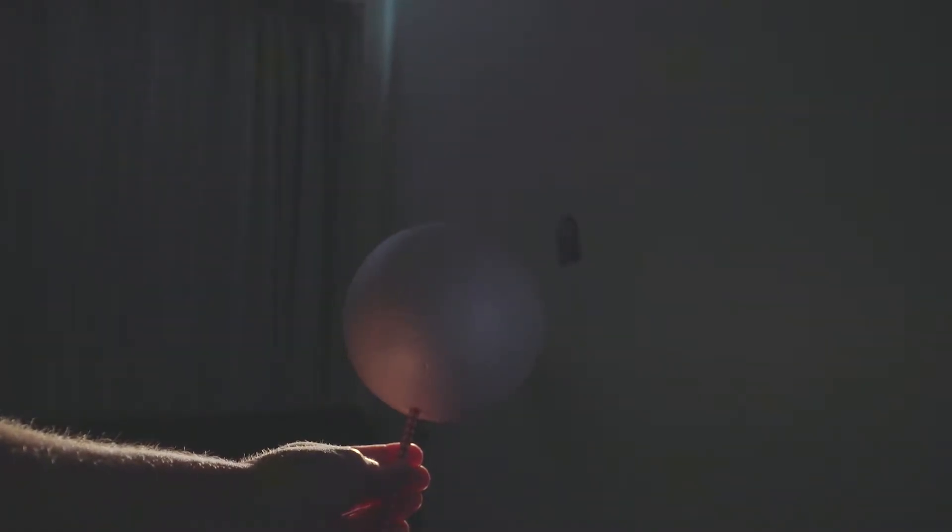First, hold the moon on your outstretched arm, blocking the lamp, or sun, from your sight. You will see the moon is all dark, just like when you can't see the moon in the night sky. This is called new moon.